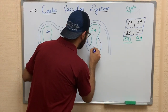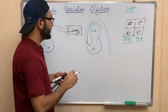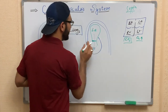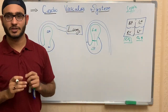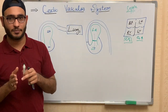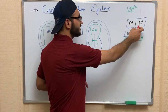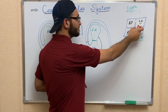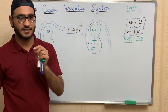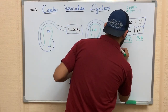There is a valve between the left atrium and the left ventricle, and the name of this valve is the bicuspid valve. The reason it is called the bicuspid valve is that it contains two cusps.